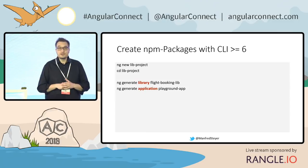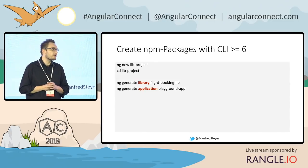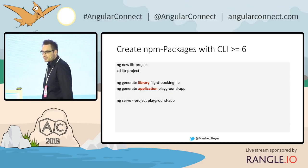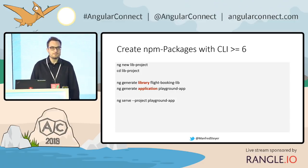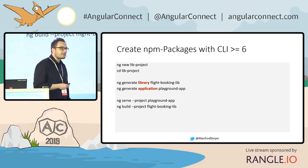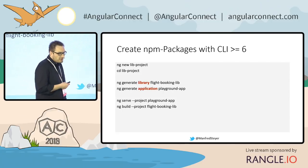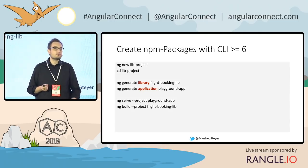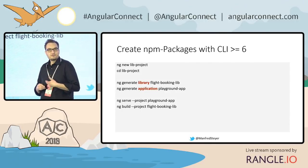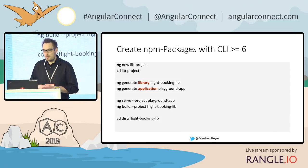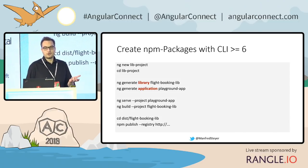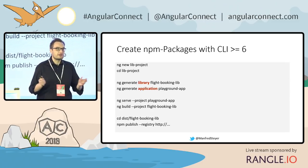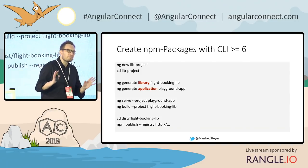In addition, you can add further applications — for instance, a playground application to test your library. To execute the playground application, you serve it with the project switch. And when everything is good, you can build your library. This creates everything you need to publish using an NPM registry — either the public registry or one installed in your company. For publishing, you just use the NPM publish command with your company's internal registry.